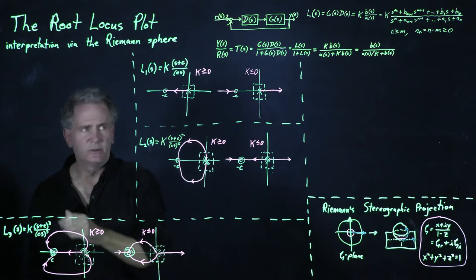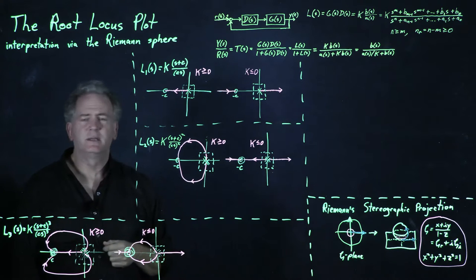This has two of each and this has three of each. And we asked what happens when C approaches infinity.